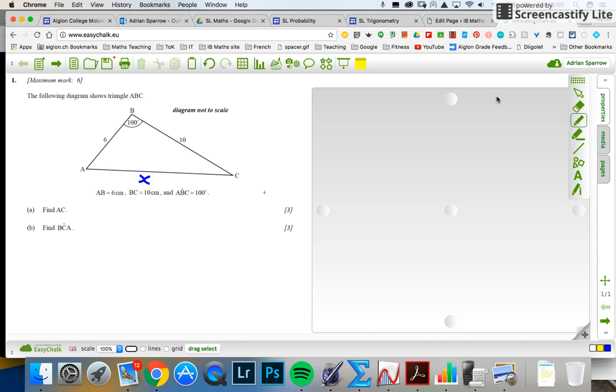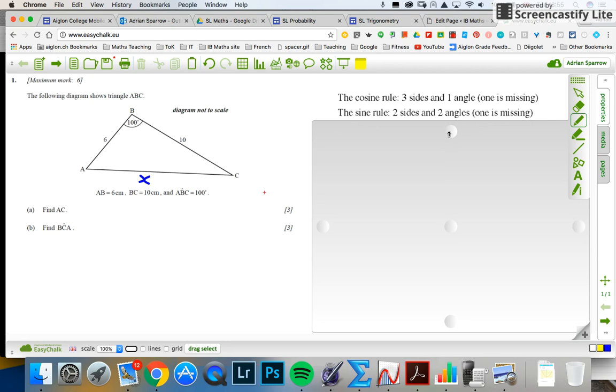And in a non-right-angle triangle, I've got two things. I've got the sine rule and the cosine rule, actually three because I've also got the area rule. But I have to decide which one I'm going to use. It's not the area because it doesn't mention area, but is it the cosine rule or the sine rule? The cosine rule has three sides and one angle. One of those four things is missing and the sine rule uses two sides and two angles. So let's have a look at this.